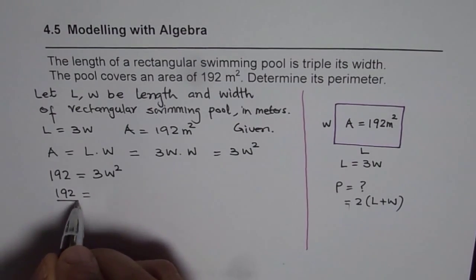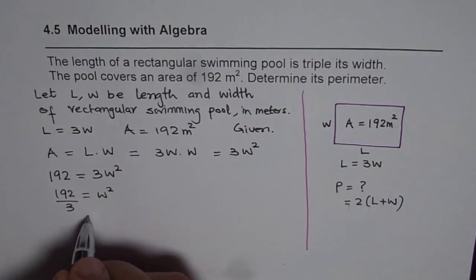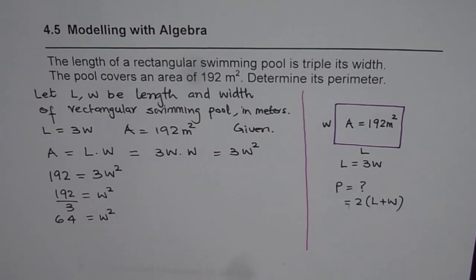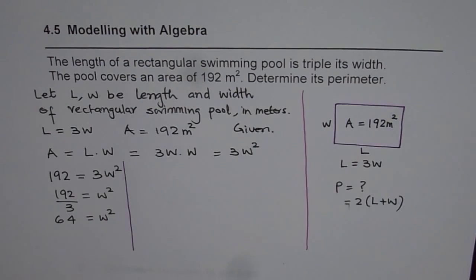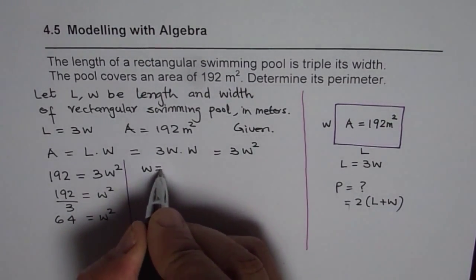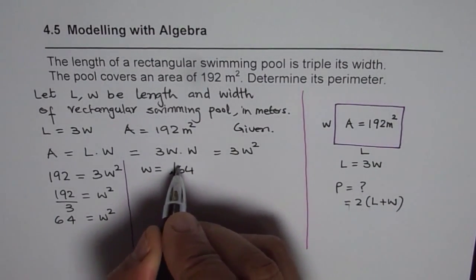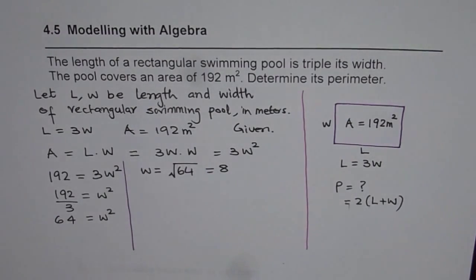We divide both sides by 3 first, giving W² = 64. You can use a calculator at this stage — 192 divided by 3 equals 64. So W² = 64, which gives us the width of the rectangular pool. Taking the square root, width equals √64, which is 8. So the width is 8 meters.